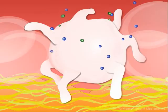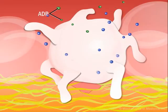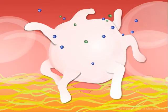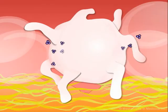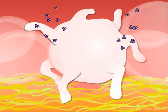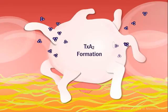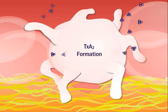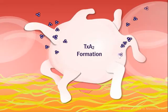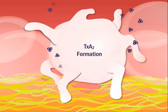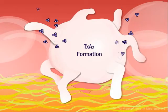For example, the aggregating agent ADP is released from the dense granules. Platelet activation stimulates the formation of another aggregating agent, thromboxane A2, abbreviated here as TXA2, via the arachidonic acid cascade. Details are shown in figure 26-5.